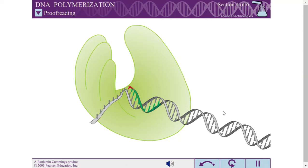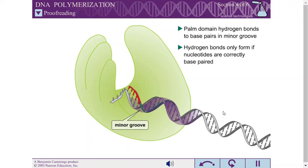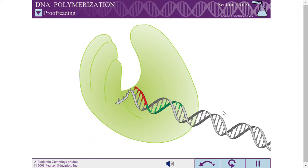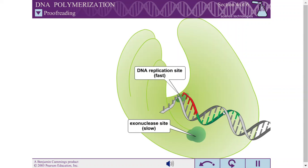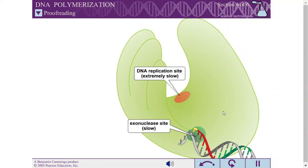Another function of the palm domain is proofreading. The palm region makes extensive hydrogen bond contacts with the base pairs in the minor groove of the newly synthesized DNA. These contacts are not base-specific, but they only form if the recently added nucleotides are correctly base paired. In the rare event that a mismatched base pair is added, the distorted geometry of the substrate causes the replication rate to slow dramatically, and the primer-template junction is free to move and interact with the exonuclease site.